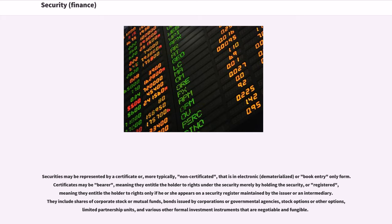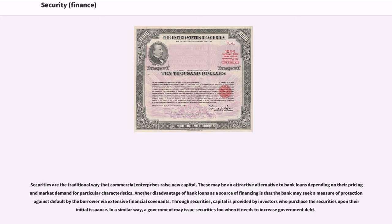Securities may be classified according to many categories or classification systems. Securities are the traditional way that commercial enterprises raise new capital. These may be an attractive alternative to bank loans depending on their pricing and market demand for particular characteristics. Another disadvantage of bank loans as a source of financing is that the bank may seek a measure of protection against default by the borrower via extensive financial covenants.